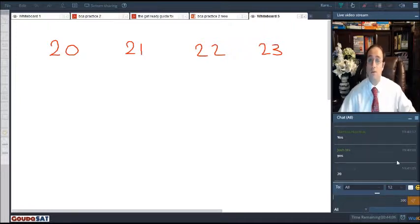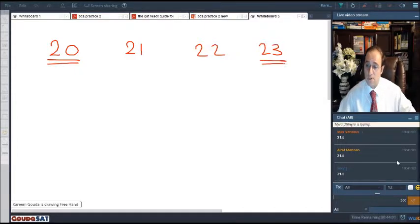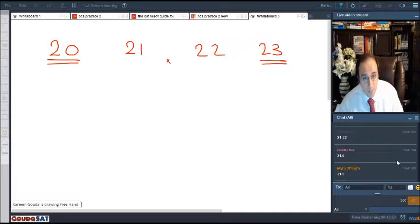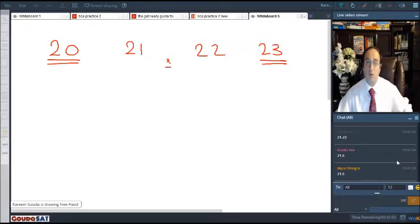No, Noor, it's not going to be 20. The average of these four numbers is definitely not going to be 20, and it's definitely not going to be 23. It's not going to be the first one, it's not going to be the last one. So it's going to be somewhere in the middle, right? So it's going to be about 21 and a half.